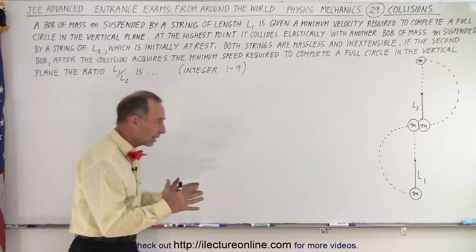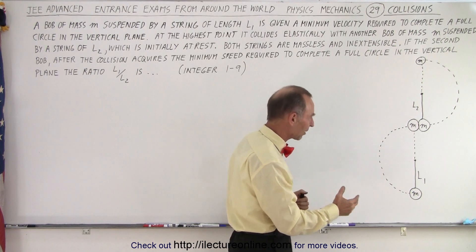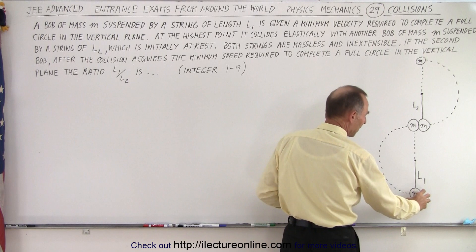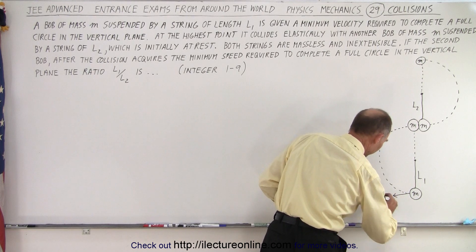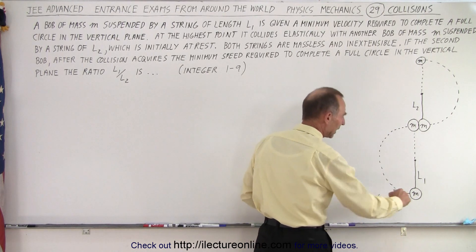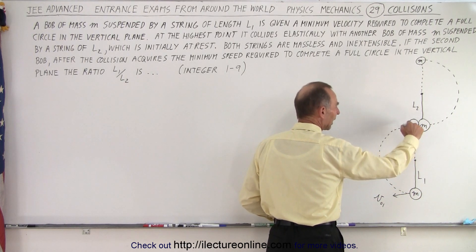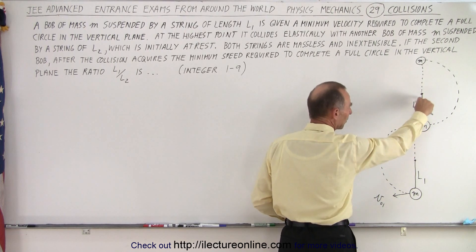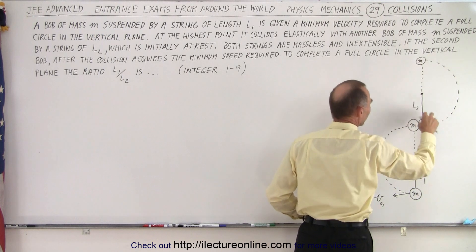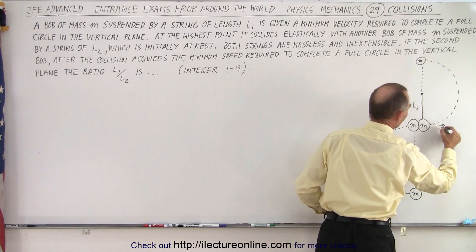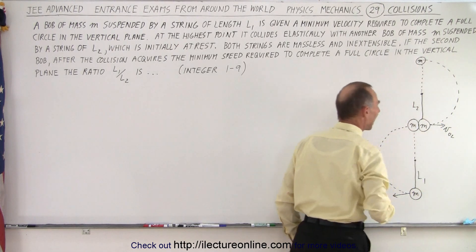I drew a diagram — it doesn't come with the question, you have to draw it yourself, but just in the interest of time, here it is. We have a bob of mass m suspended from string l1, and it takes on some initial velocity v_initial for the first bob. It acquires enough velocity so it makes a complete circle. At the top, it collides with another bob suspended by string l2, and that second bob has enough initial velocity to make it to the very top without the string collapsing.